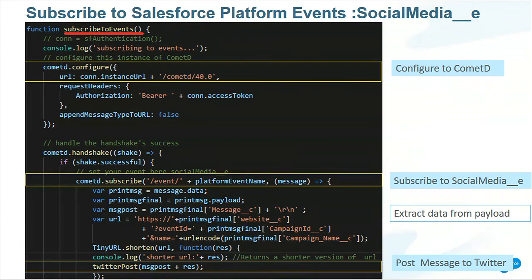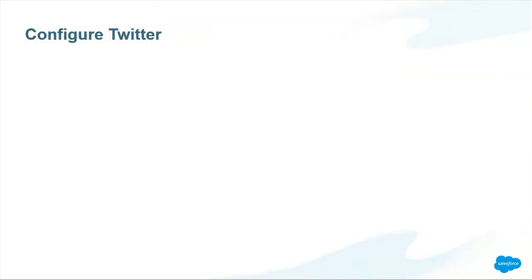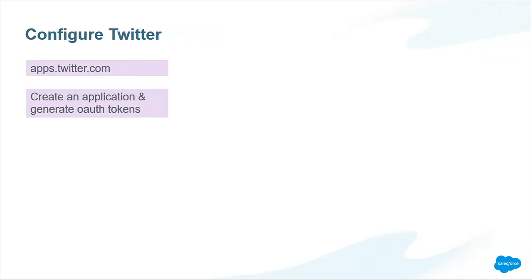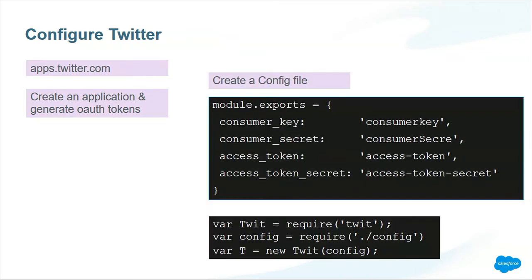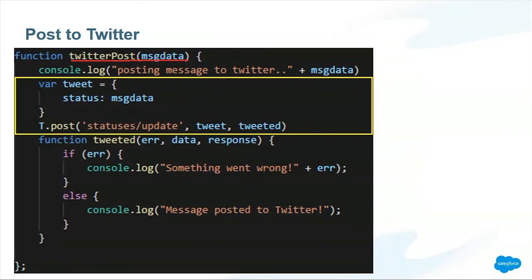For those not aware of how to set up a Twitter developer account: you go to apps.twitter.com, create a project which generates the OAuth tokens, and once you create it, you get those credentials and import them into a file — so you have the Twitter client instantiated. The message received from the campaign platform event bus is then posted to Twitter.